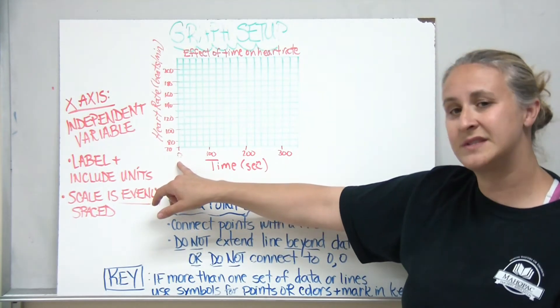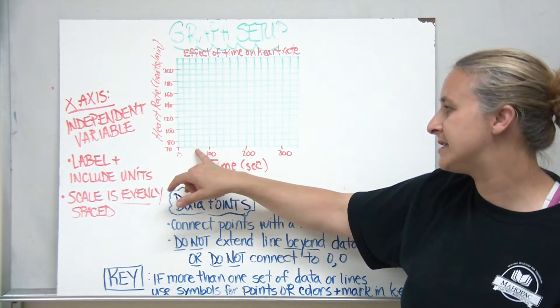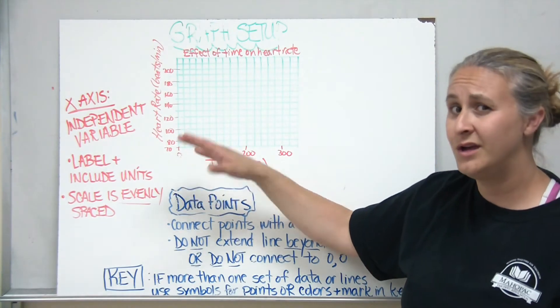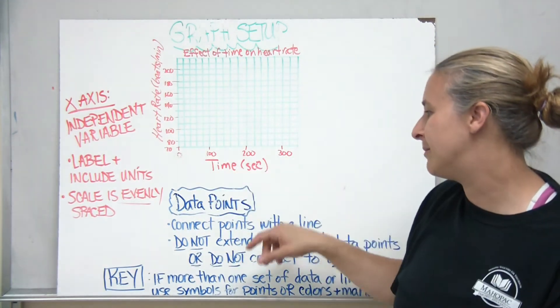So in this case, it starts at zero and it's going to go by 20s. 20, 40, 60, 80, 100. Notice I didn't label every box in order to prevent crowding by labeling.